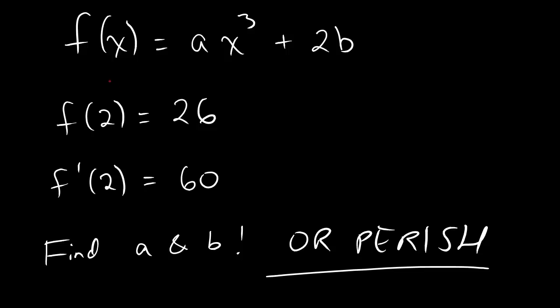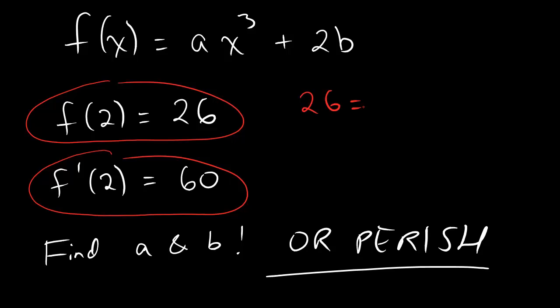We know what happens when you plug in 2, and we also know what happens when you take the derivative and then plug in 2. So, actually, let's just write those down. That is literally the only thing we could do. So, let's go ahead and write them down and see what happens. If we plug in that x equals 2 means y equals 26, we get this equation. 26 equals a times 2 cubed plus 2b, and we can even simplify that. 26 equals 2 cubed is 8,